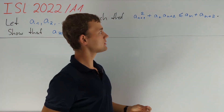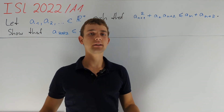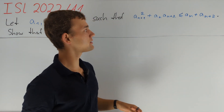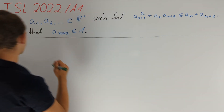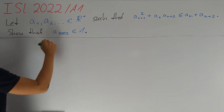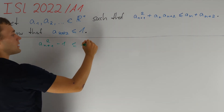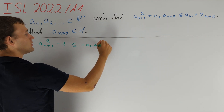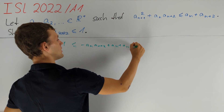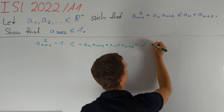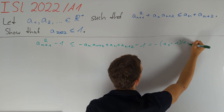We want to do some factorizations, so it is a good idea to subtract this product, and we see that if we subtract one from both sides the right side becomes factorizable. We obtain aₙ₊₁² minus one is less than or equal to minus aₙ aₙ₊₂ plus aₙ plus aₙ₊₂ minus one, and we can write the right side as minus (aₙ minus one)(aₙ₊₂ minus one).